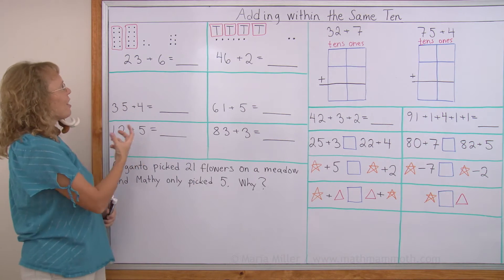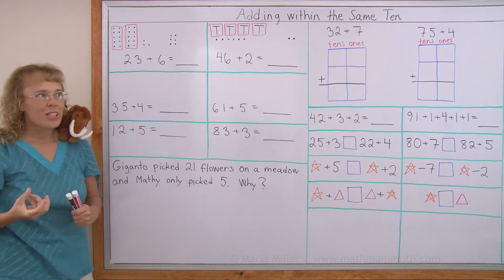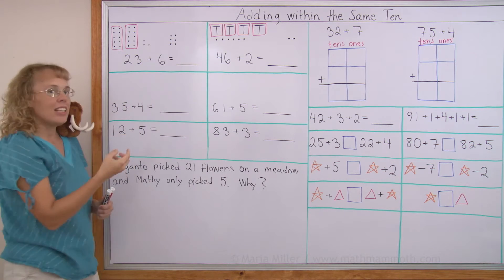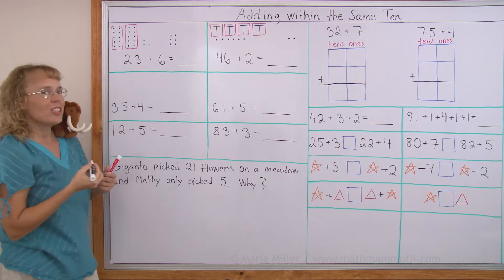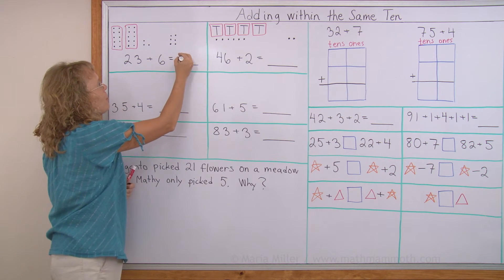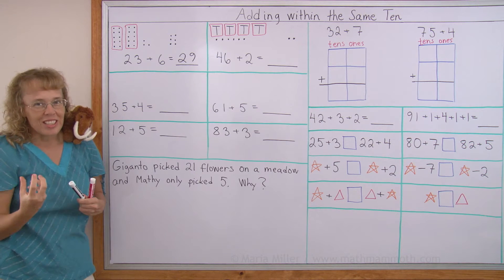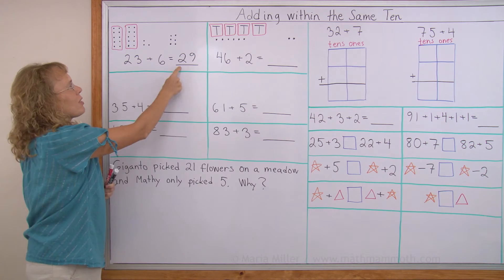First of all, I have here 23 plus 6. And so what we can do is add the 3 and the 6 and that is 9. And these two 10s are not going to change. They are still going to be there. We have two 10s and 9. So I have like a shortcut here. I can just add 3 plus 6 equals 9. The two 10s will not change.